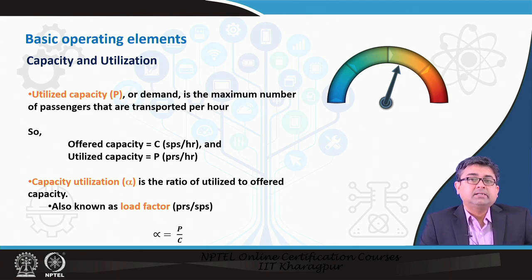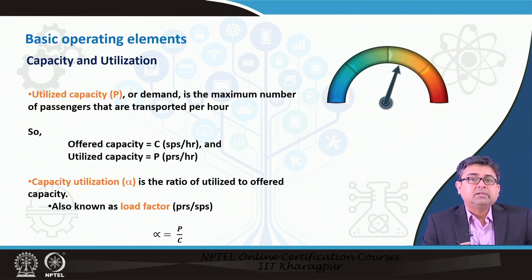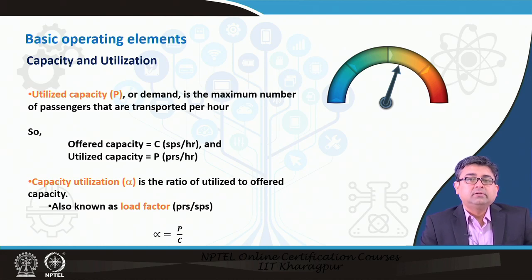Utilized capacity is the demand — the maximum number of passengers actually transported per hour. There is always a difference between offered capacity and utilized capacity, but we want to keep them close to each other. The ratio is known as the load factor or capacity utilization, and we want to keep it very close to 1 for optimal level of service. If the offered capacity is very high but utilized capacity is very low, the load factor is low — indicating inefficiency.